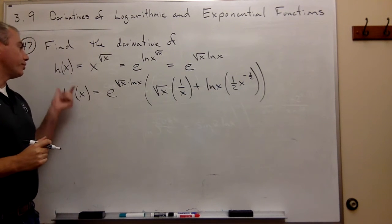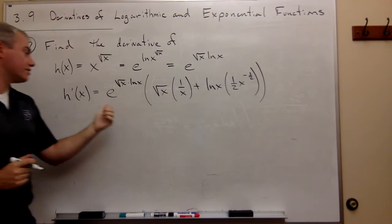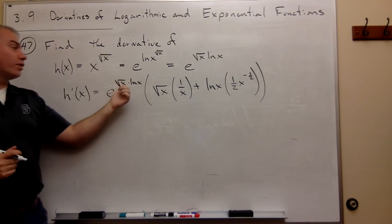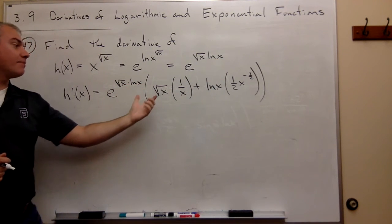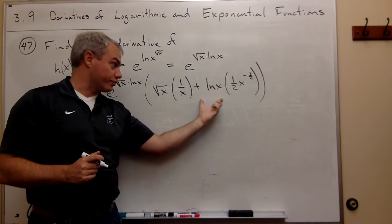So the derivative of e to the square root of x ln of x is e to the square root of x ln of x, times the derivative of square root of x ln of x, which is right here.